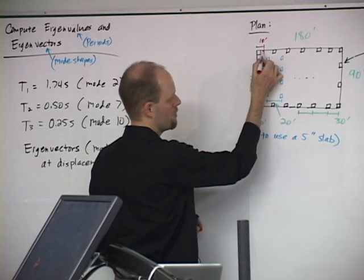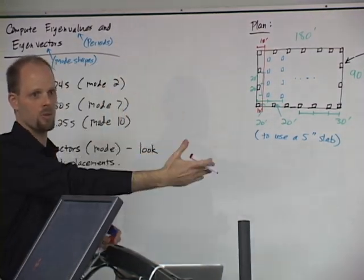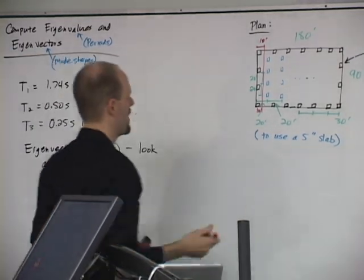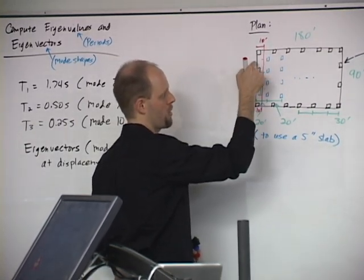And the gravity load that's here between that 10-foot line and the row of gravity columns, we would say that that load goes to the gravity columns, right? It's obviously more complicated than that. I mean, if I put a load, just a load right there, part of it would go there, and part of it would go there.